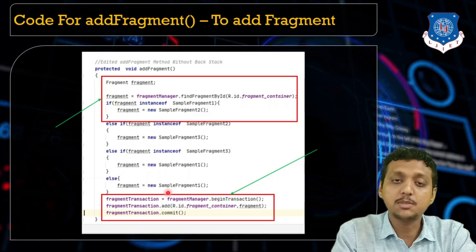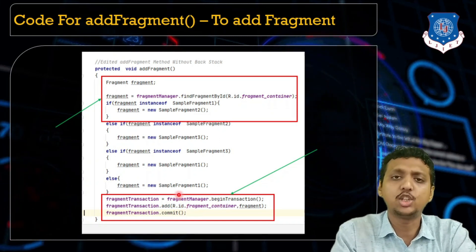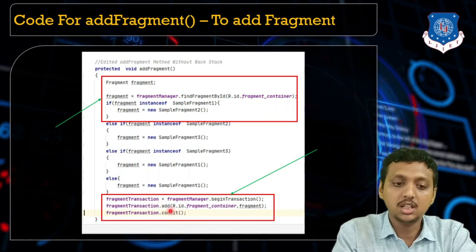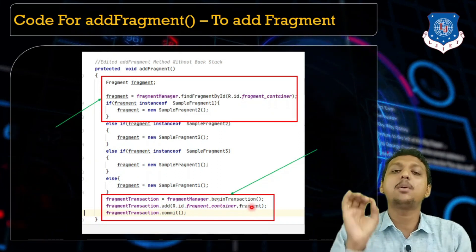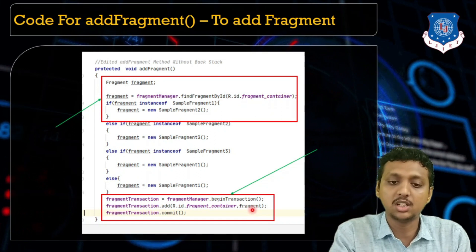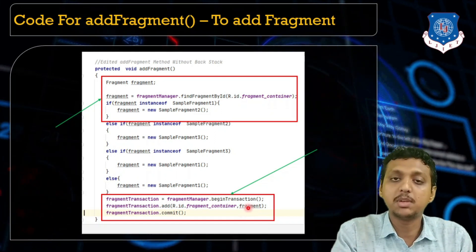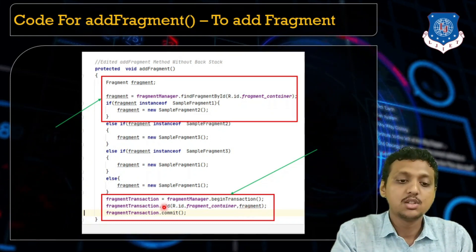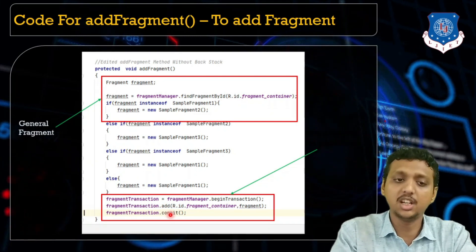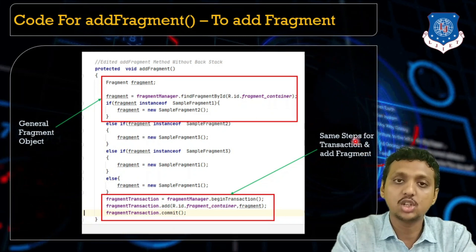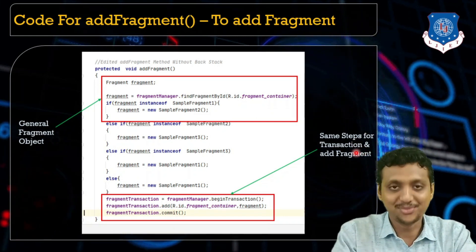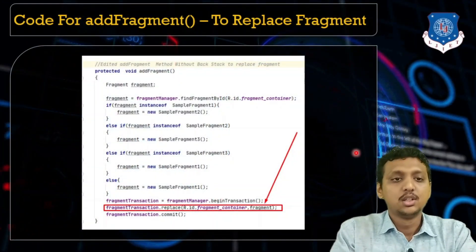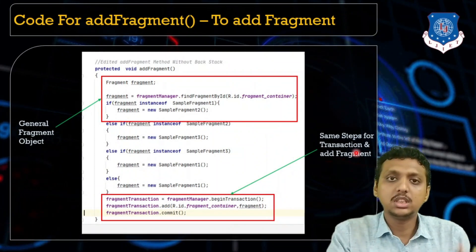The key change is that we did not implement addToBackStack in this new code. Using the FragmentTransaction, we create the transaction object and call the add method, passing the container and the general fragment object. Depending on which fragment is currently shown, this general fragment object becomes SampleFragment2, 3, or 1. Then we call commit. These are the only two changes from the previous program.